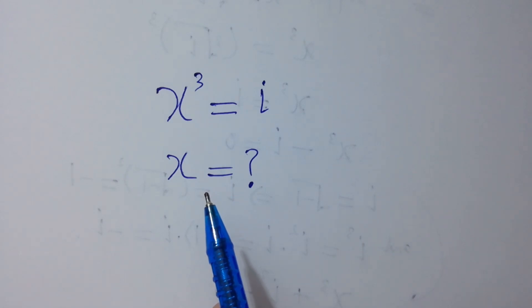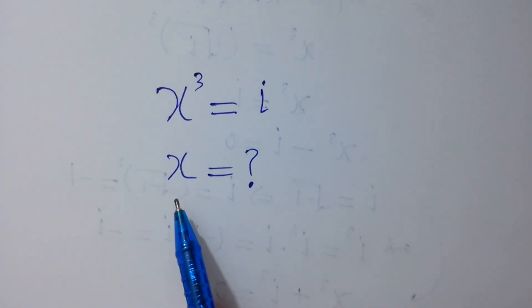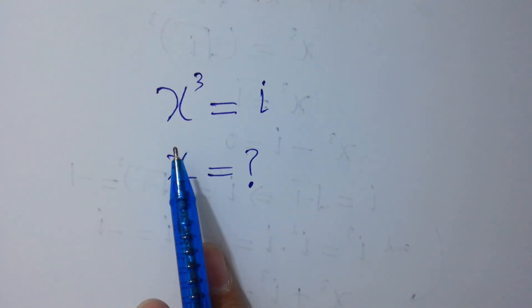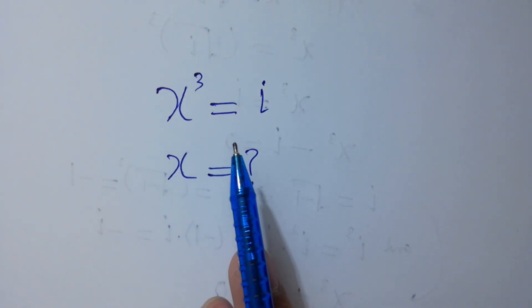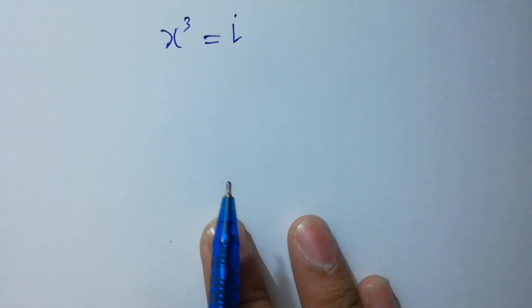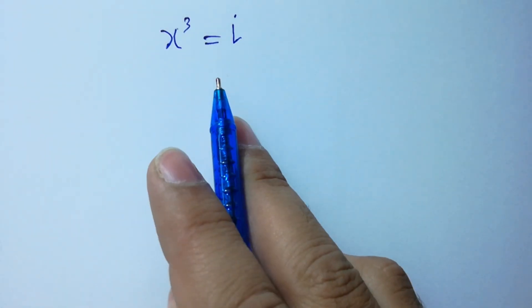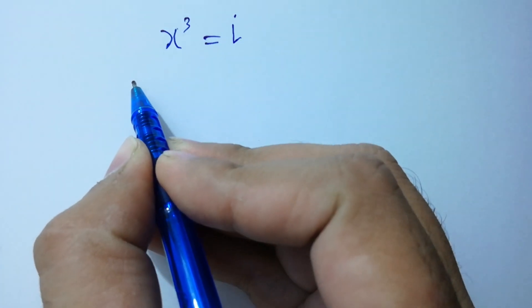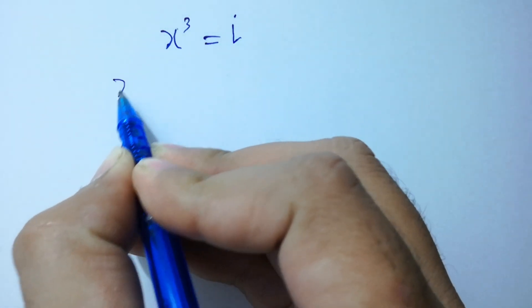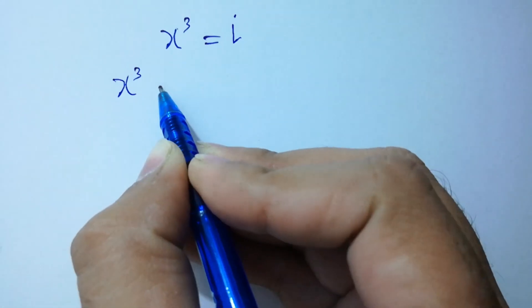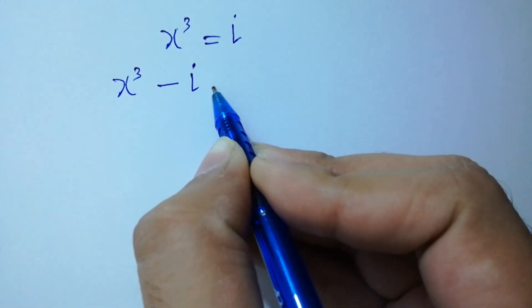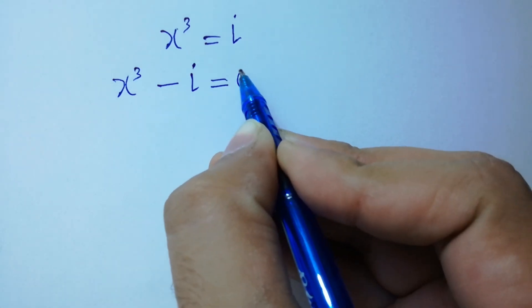Hello friends. Find the value of x if x cube equal to i. x cube equal to i, it will be equal to x cube minus i equal to 0.